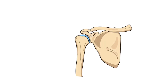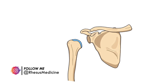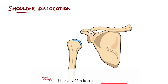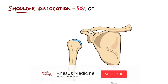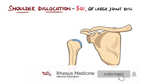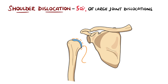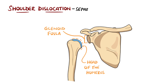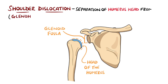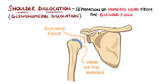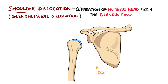A shoulder dislocation is when the humerus separates from the shoulder joint and is the most common of the large joint dislocations. Normally the shoulder joint is made up of the head of the humerus articulated with the glenoid fossa of the scapula, which is why it is known as the glenohumeral joint.